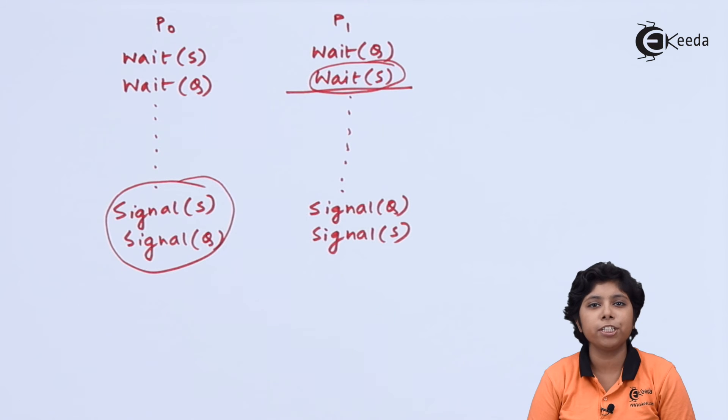This occurs often with systems with more than two priorities. So one solution is to have only two priorities within the processes, but this is not applicable to more general-purpose computer systems. So another solution is implemented in this way: the priority inheritance protocol.